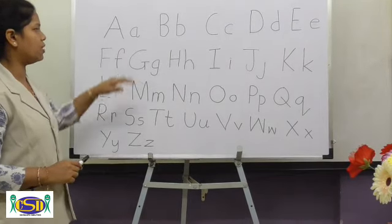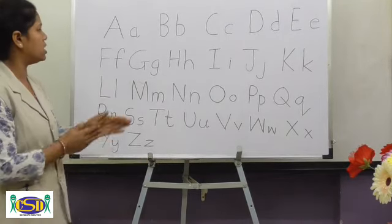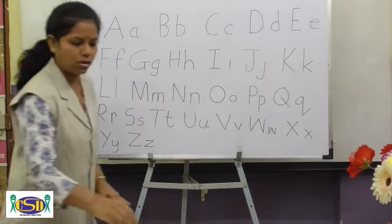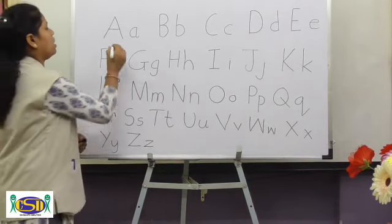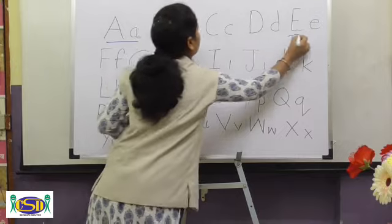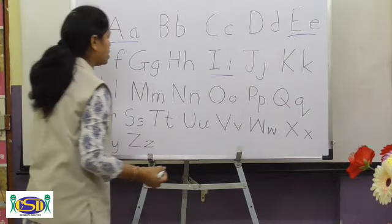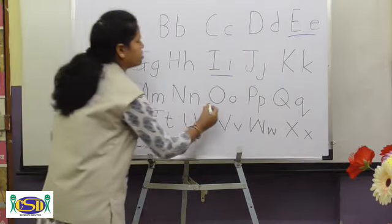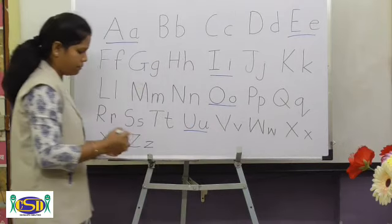Okay, now we are going to see the sounds of these letters. These are A, E, I, O, U — these are vowels. Vowels have two sounds.